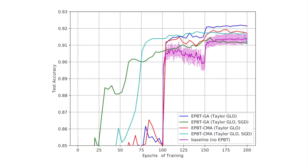On the CIFAR-10 image classification benchmark, both GA and CMA-ES variants of ePBT outperformed the PBT baseline when evolving only TaylorGLO parameters. That is, the blue and red training curves converge to a higher accuracy than the magenta training curve.